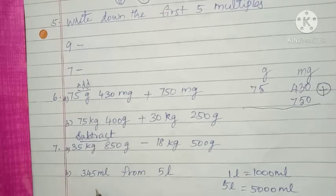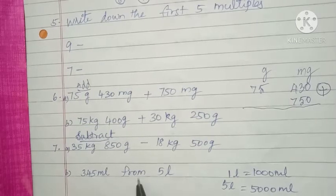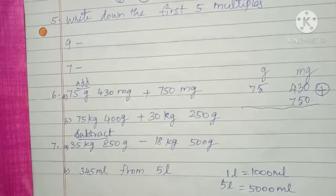Then next one sum, 345 milliliters from 5 liters. So 5 liters you convert to milliliters.